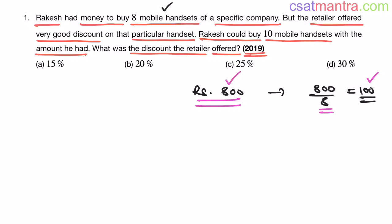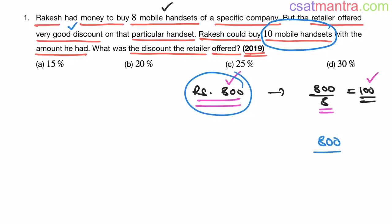Now the shop owner gave a very good discount. With the same amount I was able to buy 10 mobile handsets. What is the cost of each handset now? Total money divided by number of handsets: 800 by 10 equals 80 rupees. So 100 rupees is the regular price without discount, and 80 rupees is the selling price after discount.